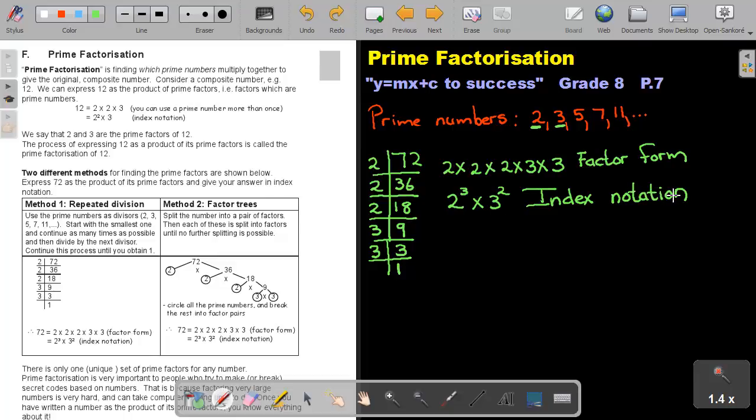Now, let's go through the theory. Prime factorization is finding which prime numbers multiply together to give the original composite number. So, which prime numbers multiply together to give the composite number of 72.